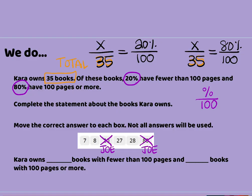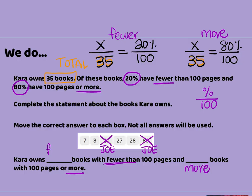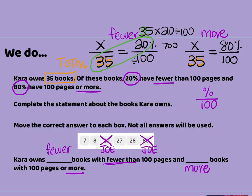Remember 20% was fewer, so I'm going to label this one as fewer, and 80% was more, so I'm going to label this side as more. That's going to help me when I label at the bottom — fewer in my first box and more in my second. Now solving: we just cross multiply. 35 times 20, and we're going to divide by 100. 35 times 20 is 700, and 700 divided by 100 — we can cross off our zeros — and all we have left is 7. So how many books were fewer? Seven.